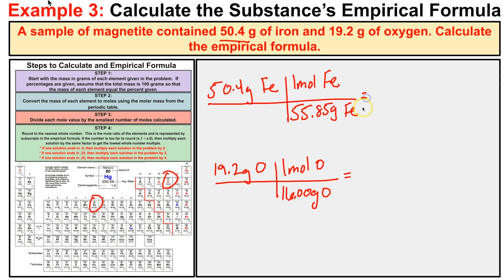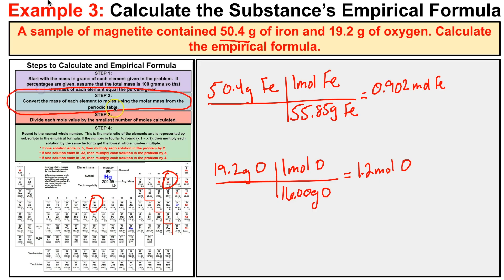Calculating the moles, we get 0.902 moles of iron and 1.2 moles of oxygen. Step three: divide each by the smallest mole value, which is 0.902.